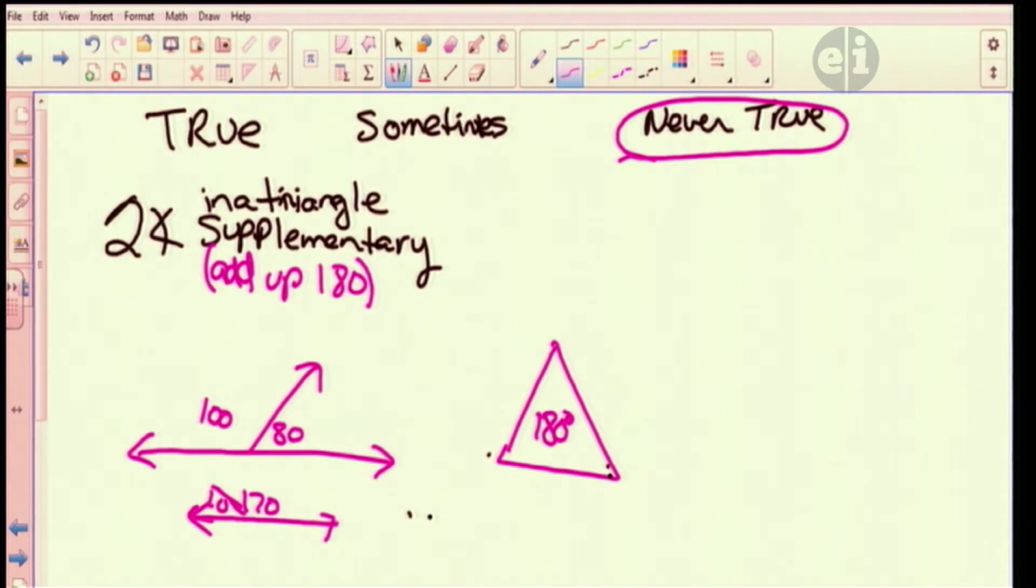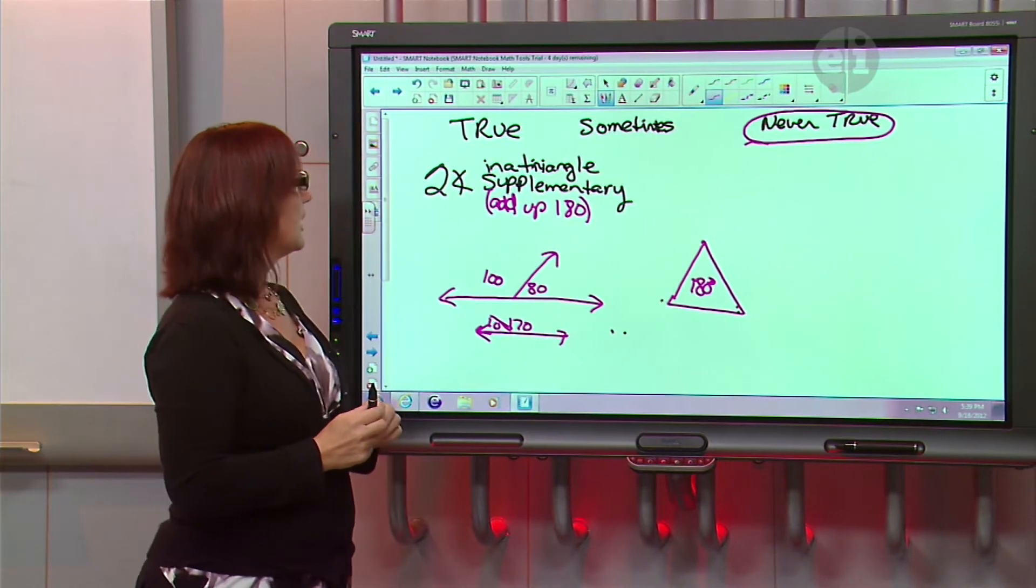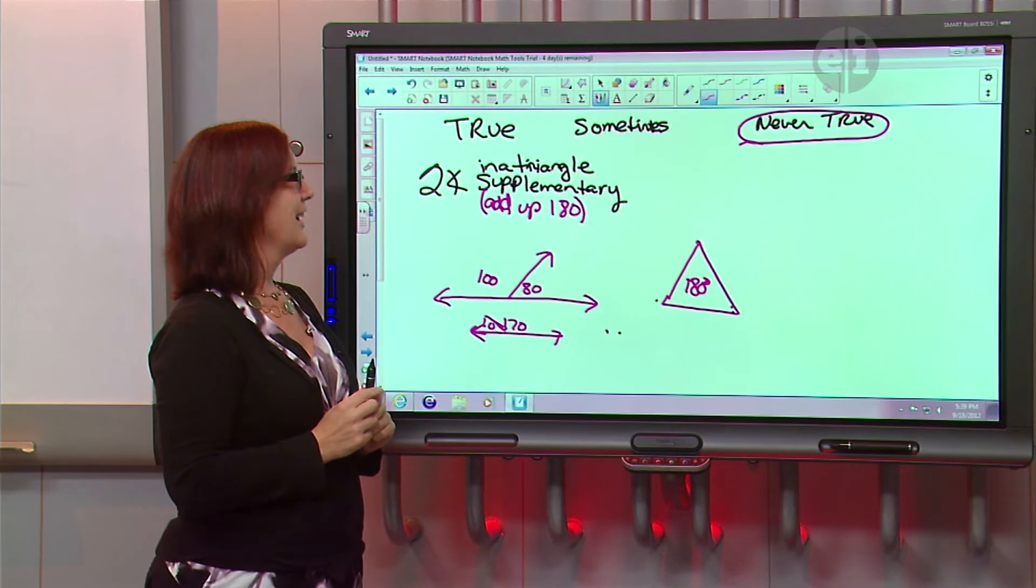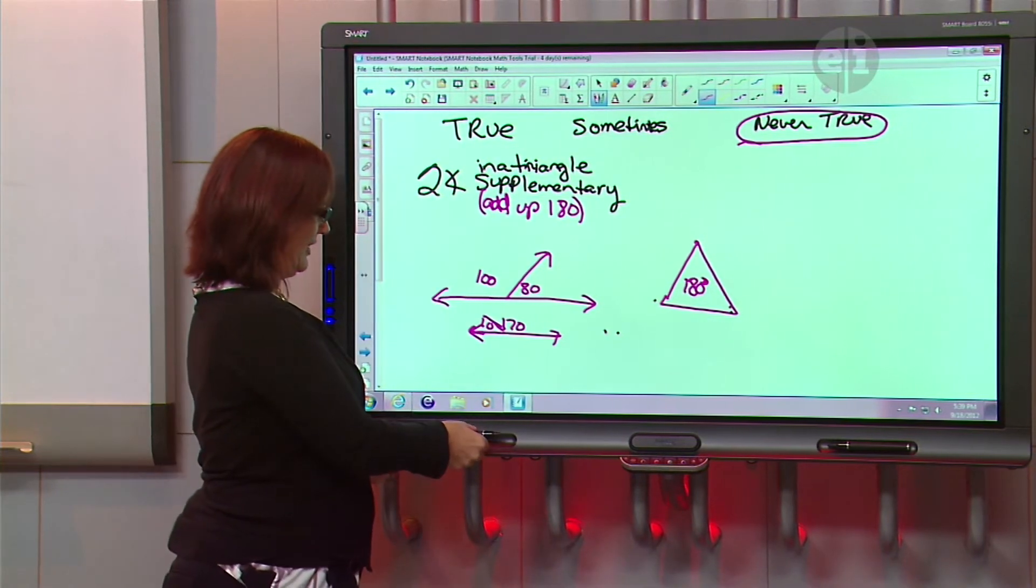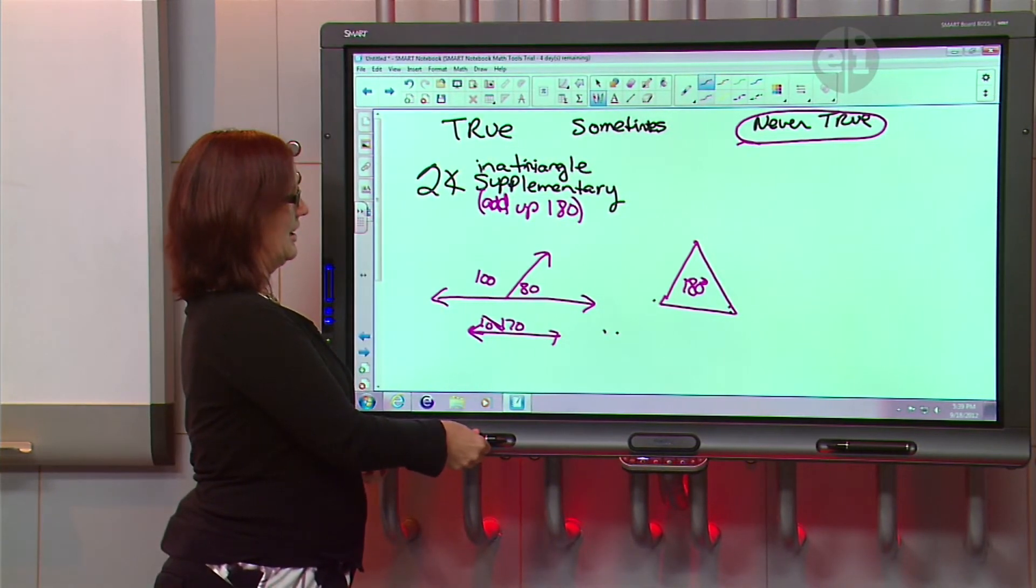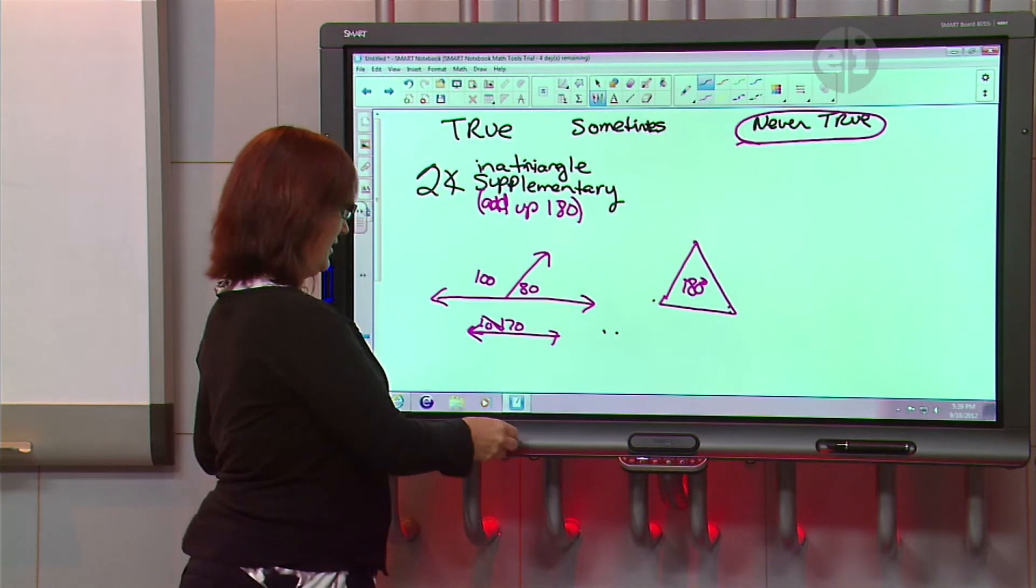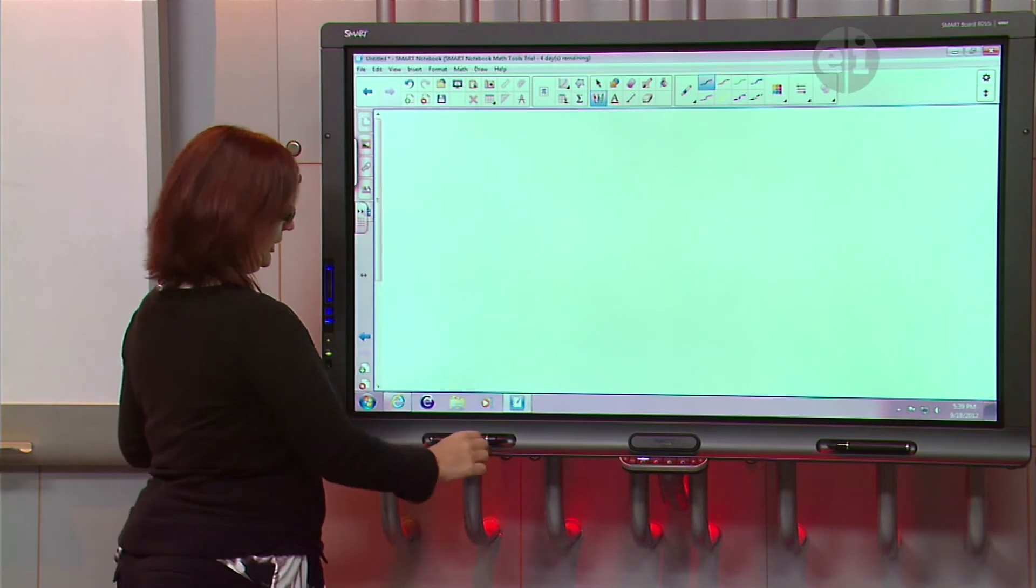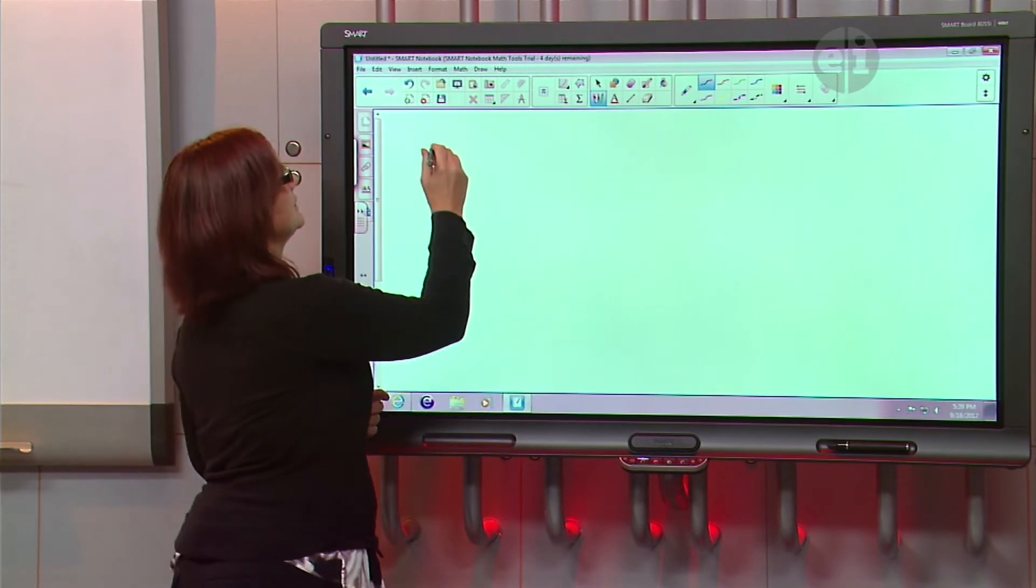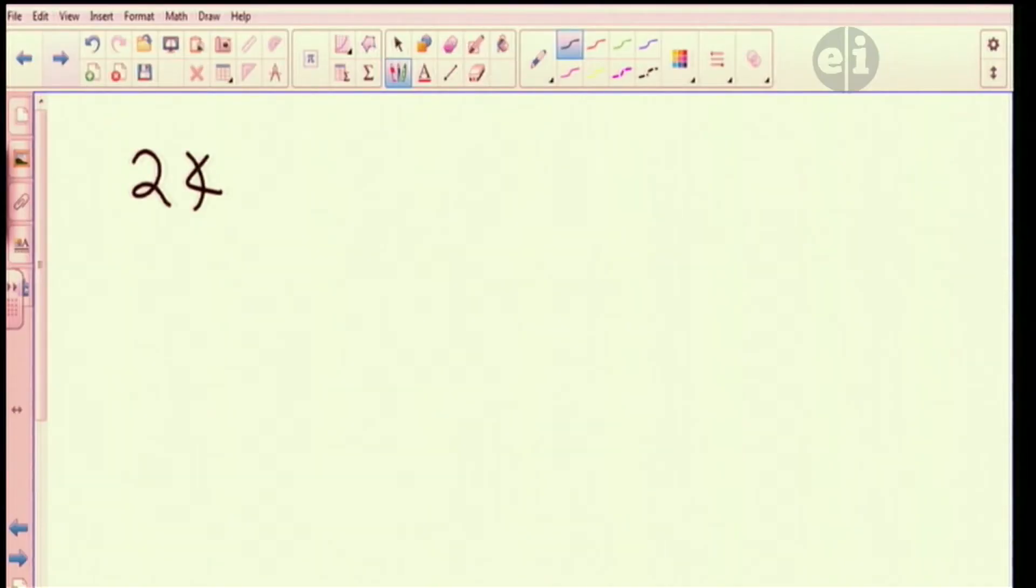Did you have another problem that you wanted to go through today? Yes. Okay. The other question was the same, never true, sometimes true or true. And it is if two angles are equal, then they are complementary. Okay. So let's think about that one. So if two angles are equal, and they're both equal,